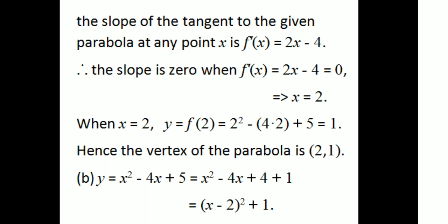Therefore the slope of the tangent is 0 at the point (2, 1). Hence the vertex of the parabola is (2, 1). That point (2, 1) is a vertex. The vertex corresponds to y equals x squared minus 4x plus 5.